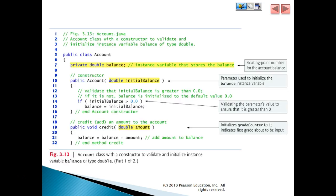We have a program here with a floating point declaration for account balance. One of the things with money and using floating point is that you can get a roundoff error. So one of the tricks often used is to convert dollar amounts to pennies, do all the calculations as integers using pennies, and then at the time you're printing the results, convert it back into a floating point.